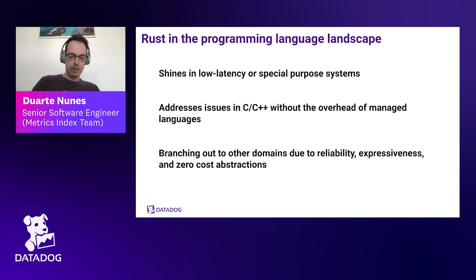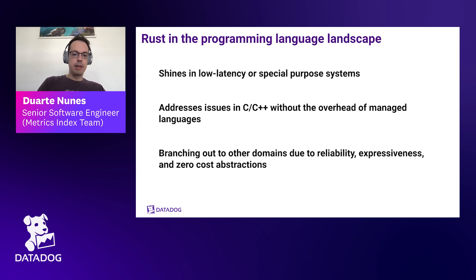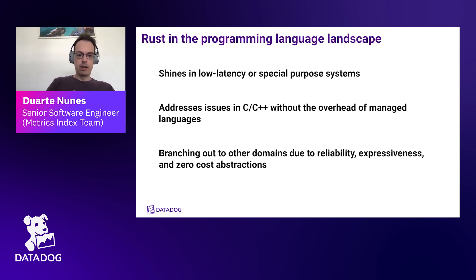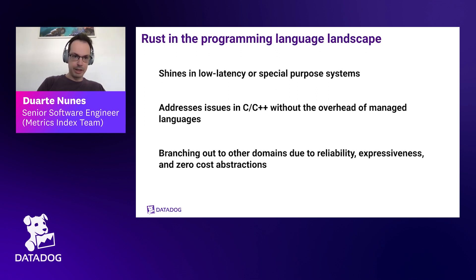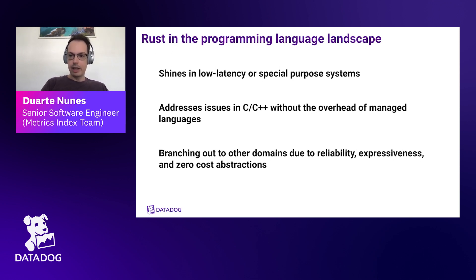Rust is a statically typed, ahead-of-time compiled language, heavily focused on reliability and performance, making it ideally suited for low-latency systems. You can also build programs that do not depend on a standard library, making it ideal for special-purpose embedded systems with significant resource constraints. The languages traditionally used in these domains are C and C++, which have shortcomings — the biggest being safety issues. For example, integer overflow in C/C++ can lead to exploits, whereas in safe Rust they are forbidden.